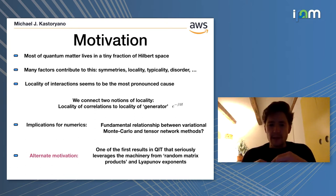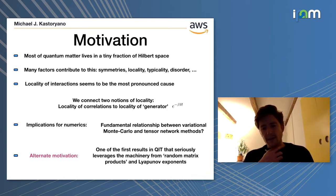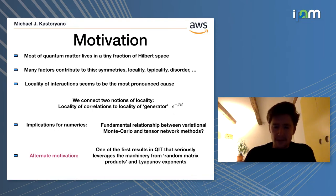There might be some implications for numerics. In particular, there might be some fundamental relationship between variational Monte Carlo and tensor network methods. We haven't been able to take advantage of that yet. From a mathematical side, what is a bit interesting is that this is, as far as we know, the first result in quantum information theory that seriously leverages the machinery from random matrix products. And so that's fun.